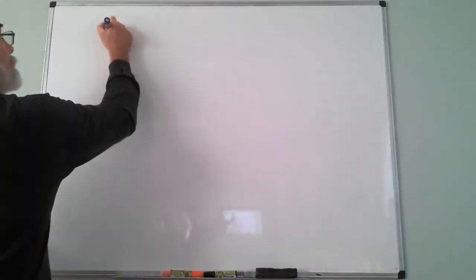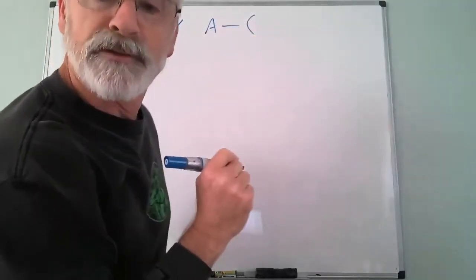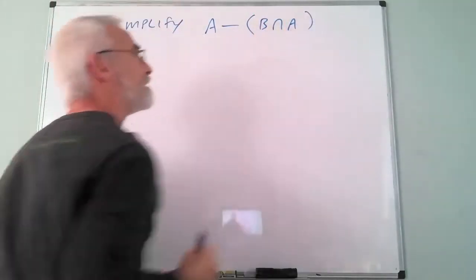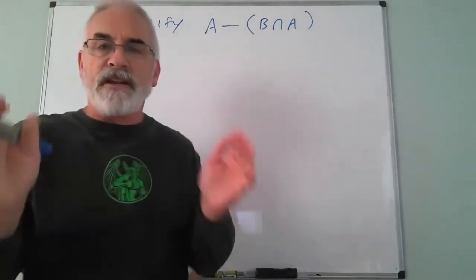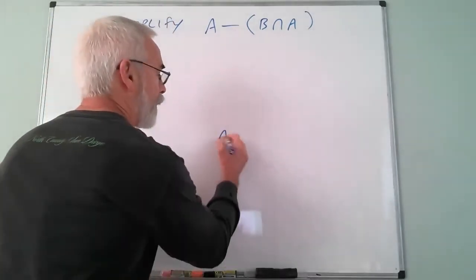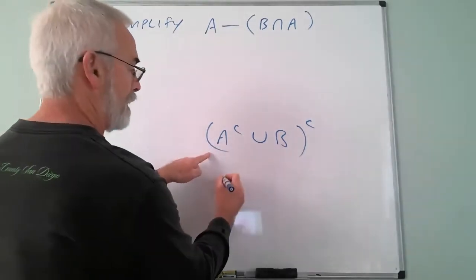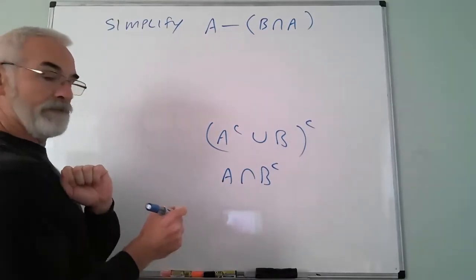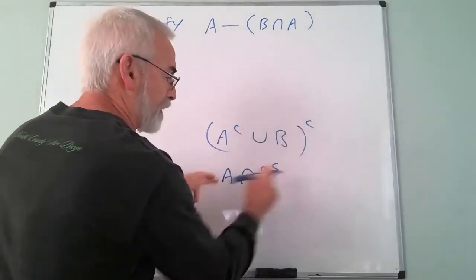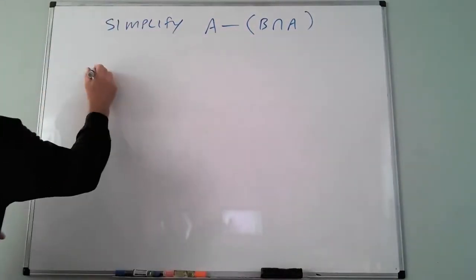The first problem I want to do is simplify A − (B∩A). To simplify means to write it in its smallest form possible. For example, a simplified answer wouldn't leave something like the complement of a union — by De Morgan's law that becomes A∩B^c, which I would reduce further. Let's first look at a Venn diagram to see what this quantity actually is.